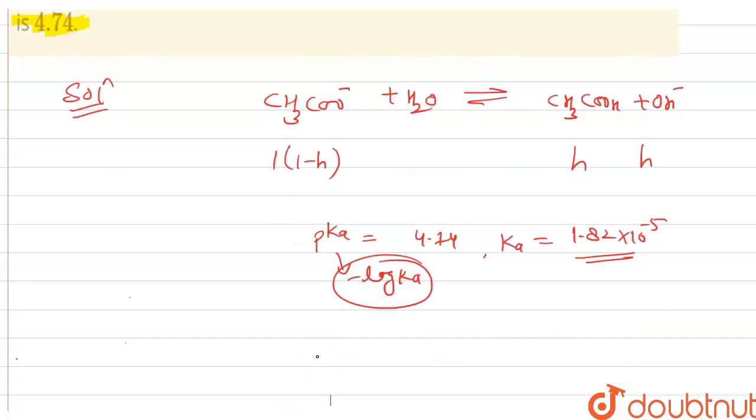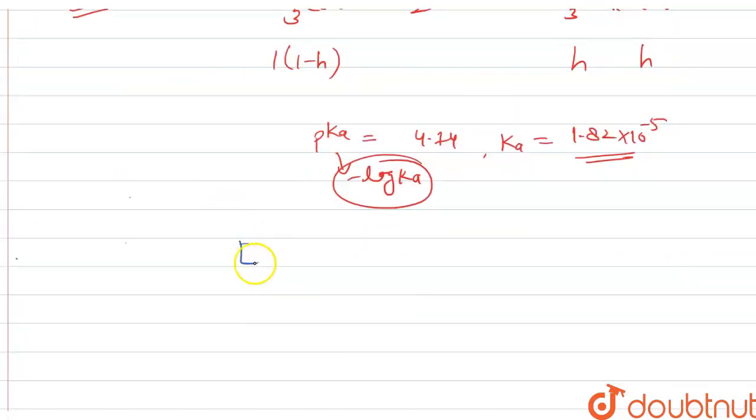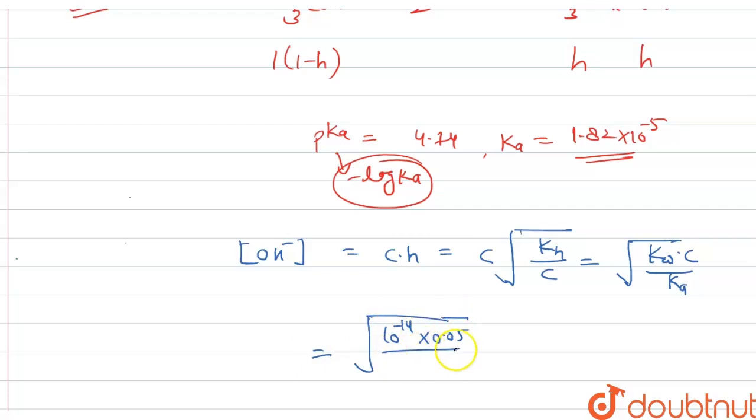Right, so now value of OH⁻, concentration of OH⁻, that is c·h, that is c under root of Ka·h divided by c, that is equals to Kw·c on Ka. Okay, so put the value. Kw is here, constant for water, that is 10⁻¹⁴ into 0.05, concentration is given here, and 1.82 × 10⁻⁵, that is equal to 5.24 × 10⁻⁶.